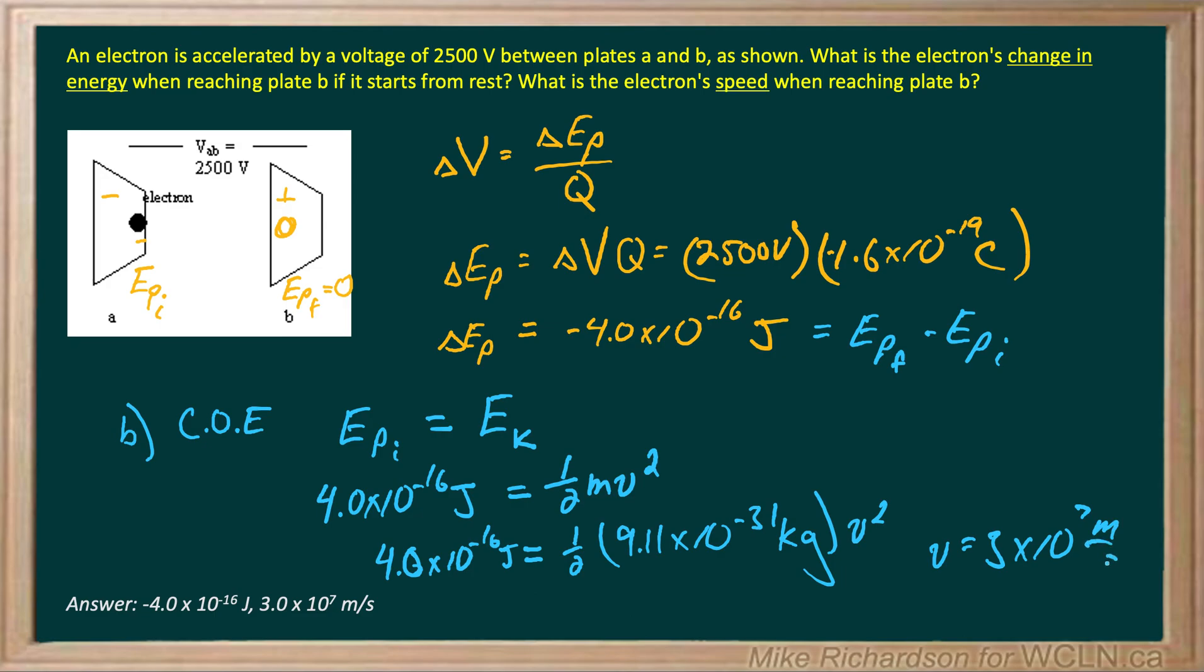Remember, the speed of light is 3 times 10 to the 8, and you can't go faster than that. If you ever get an answer bigger than 3 times 10 to the 8, you've likely done something wrong or forgotten to take a square root.